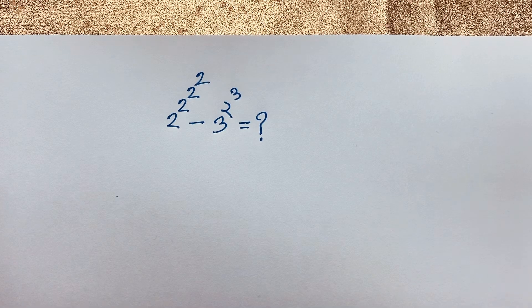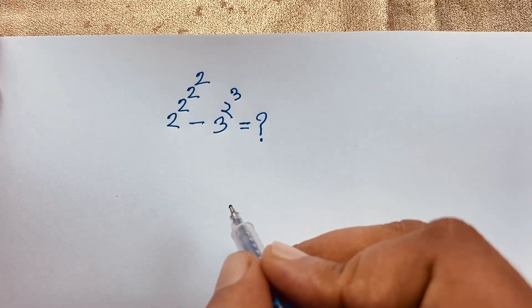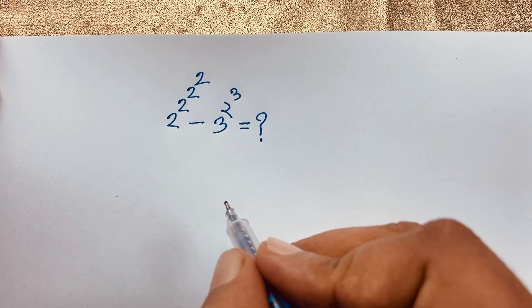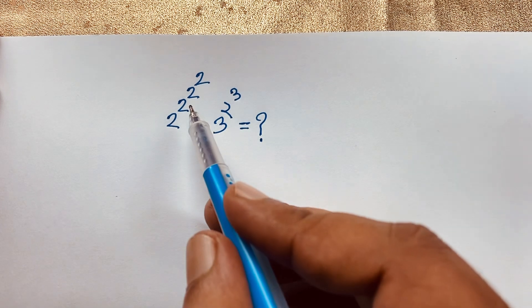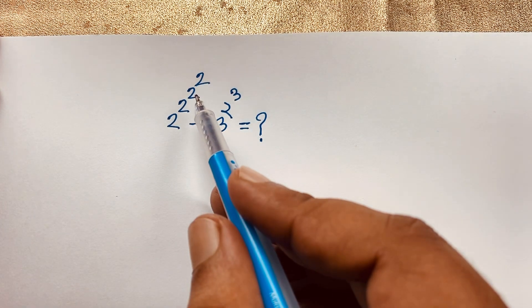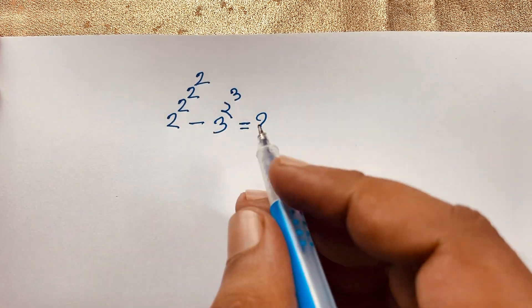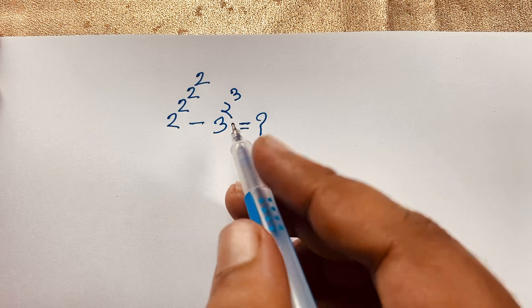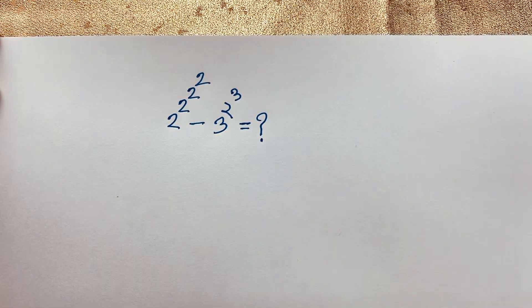Hello everyone. In this video we are solving this nice math olympiad question. It is 2 to the power 2 to the power 2 to the power 2, minus 3 to the power 2 to the power 3. How to solve this question without a calculator?